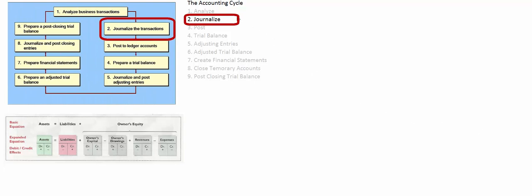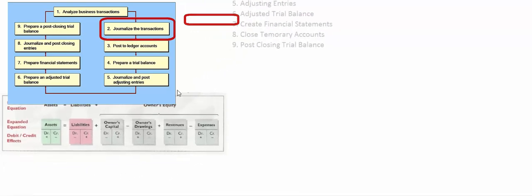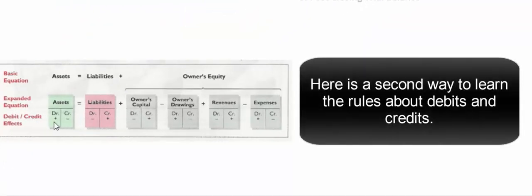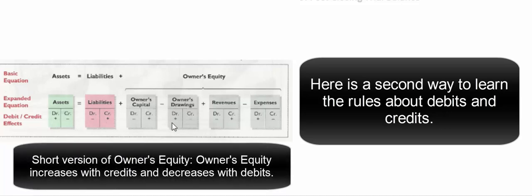Just a reminder: we're in the second step of the accounting cycle, learning to make journal entries. Our textbook breaks it down in terms of the accounting equation. Assets on the left-hand side of the balance sheet increase with debits and decrease with credits. Liabilities on the right-hand side are opposite — they increase with credits and decrease with debits. Owner's drawings are debits, revenue increases with credits, and expenses are debits.